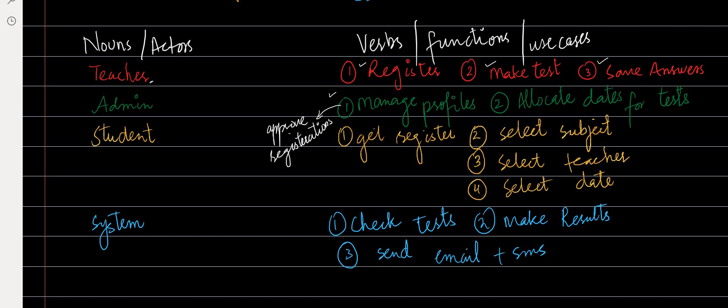Admin is basically managing profiles like approving registrations for students and for teachers. Admin can also allocate the dates for the tests — telling how many days are available. Then students can get registered, the same as for teacher. They can select a subject, then a teacher for the subject, and the date for the test — but they can only pick from the dates given by the admin. The system is then going to check the test, make the result, and send the email and SMS to the students.